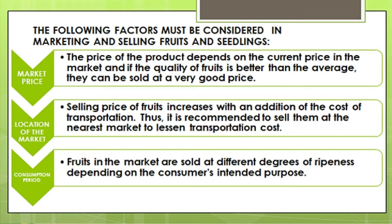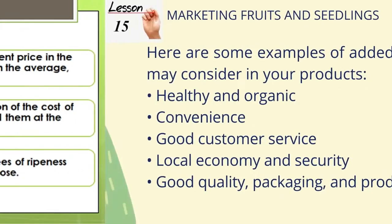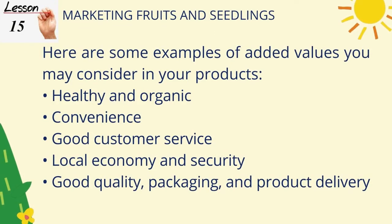Factor 3: Consumption period. Fruits in the market are sold at different degrees of ripeness depending on the consumer's intended purpose. Here are some examples of added values you may consider in your products: healthy and organic, convenience, good customer service, local economy and security, good quality packaging, and product delivery.